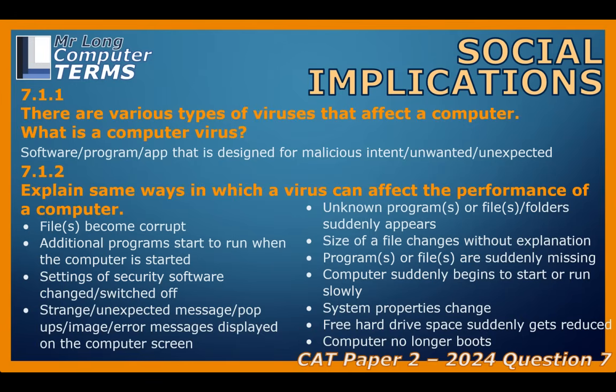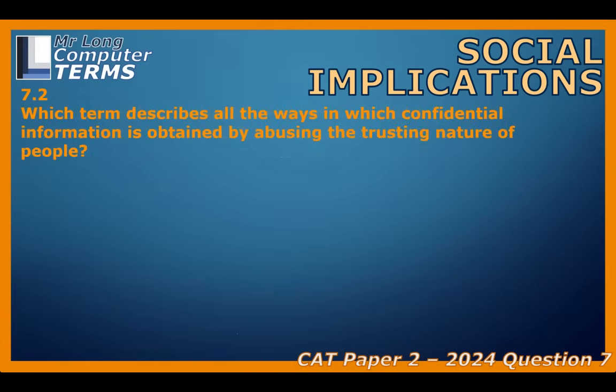We've talked about attacks on the machine and the code, but what if the weak link isn't the tech — it's us? Humans. That brings us to social engineering. The definition is basically all the ways people try to get confidential information by abusing the trusting nature of people. So it's less about cracking code and more about tricking the person — not finding a technical flaw in the system, but tricking an individual into giving up information like a password, clicking a bad link, or running a malicious file.